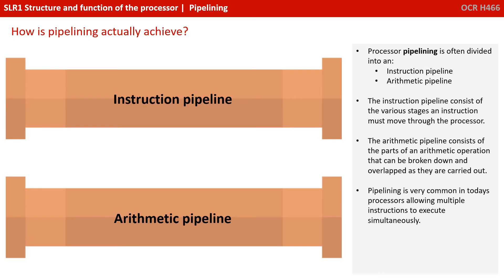Processor pipelining is often divided into an instruction pipeline and an arithmetic pipeline. The instruction pipeline consists of the various stages an instruction must move through the processor, and the arithmetic pipeline consists of the parts of an arithmetic operation that can be broken down and overlapped as they are carried out. Pipelining is very common in today's processors, and it allows multiple instructions to be executed simultaneously.